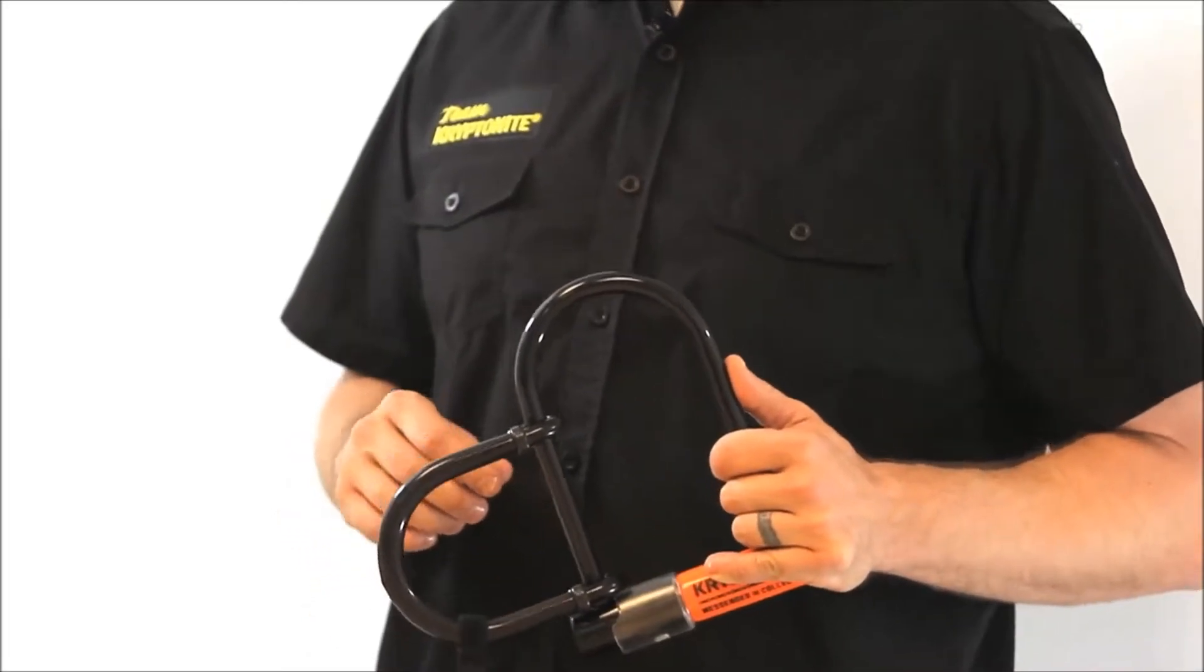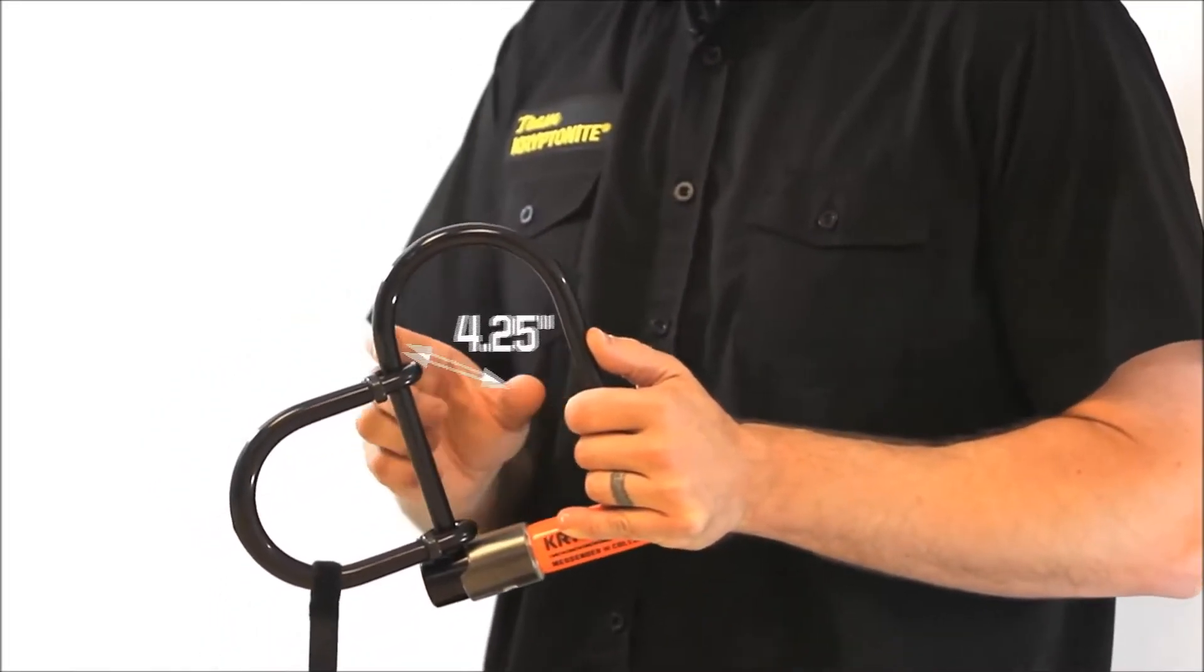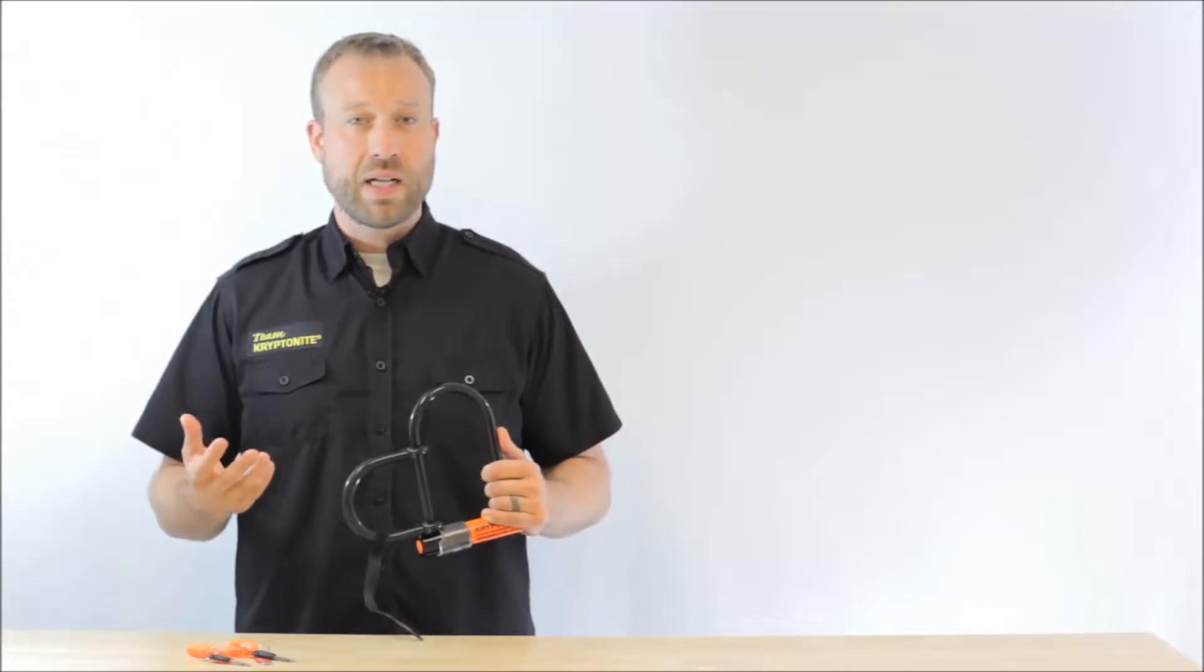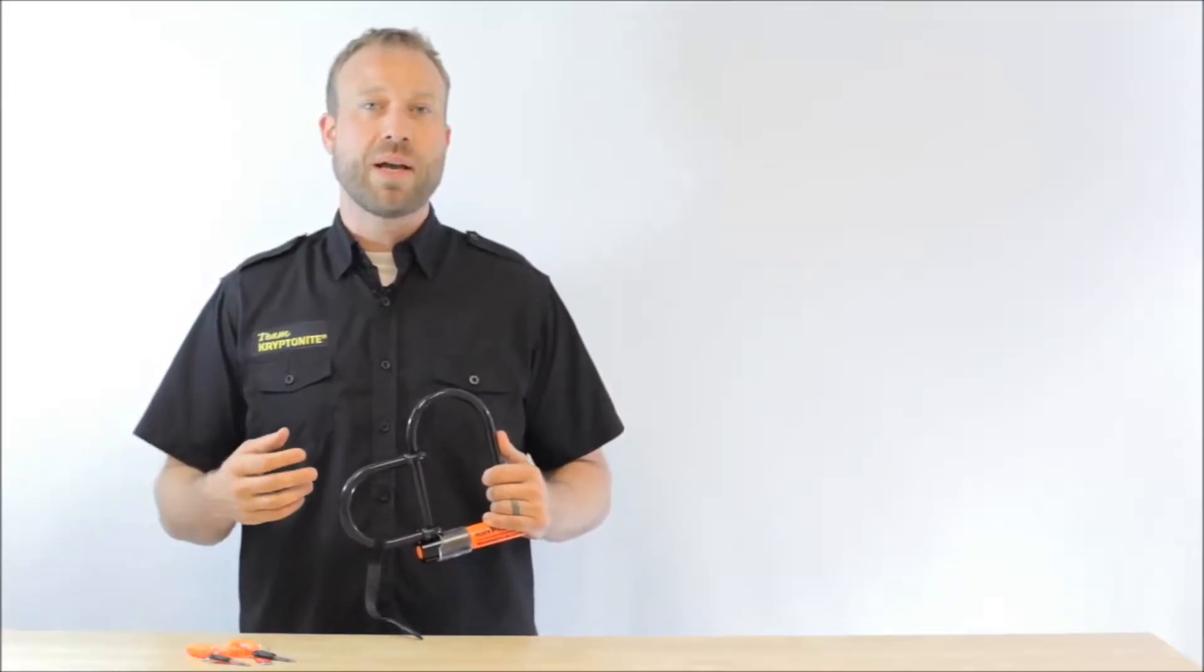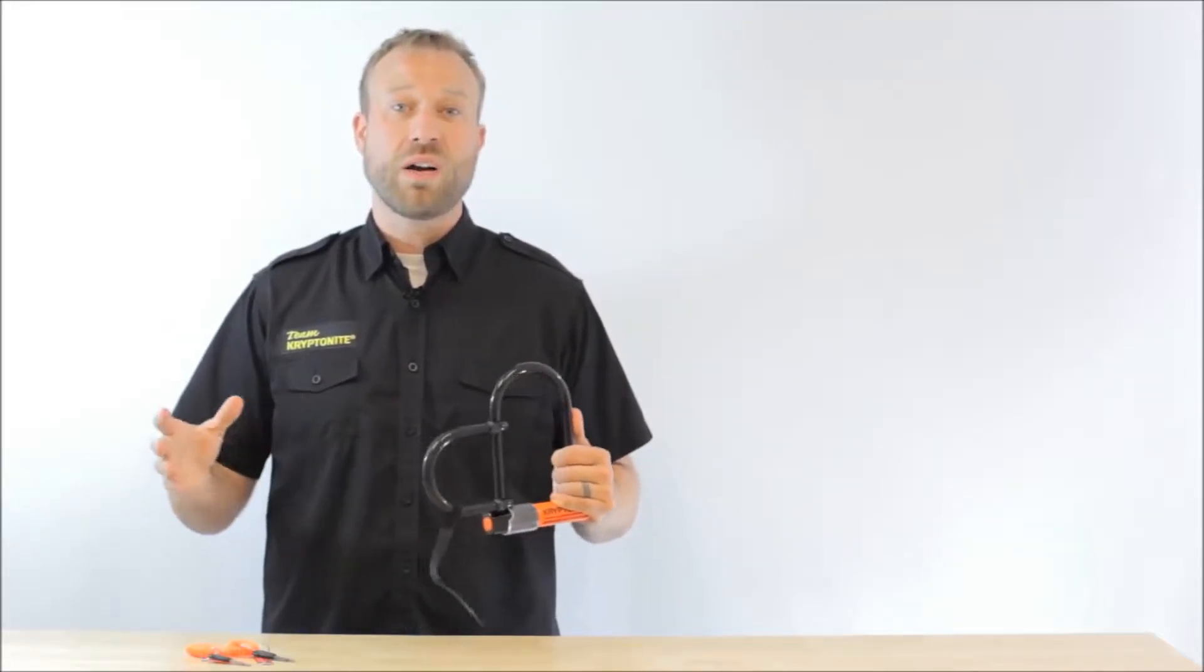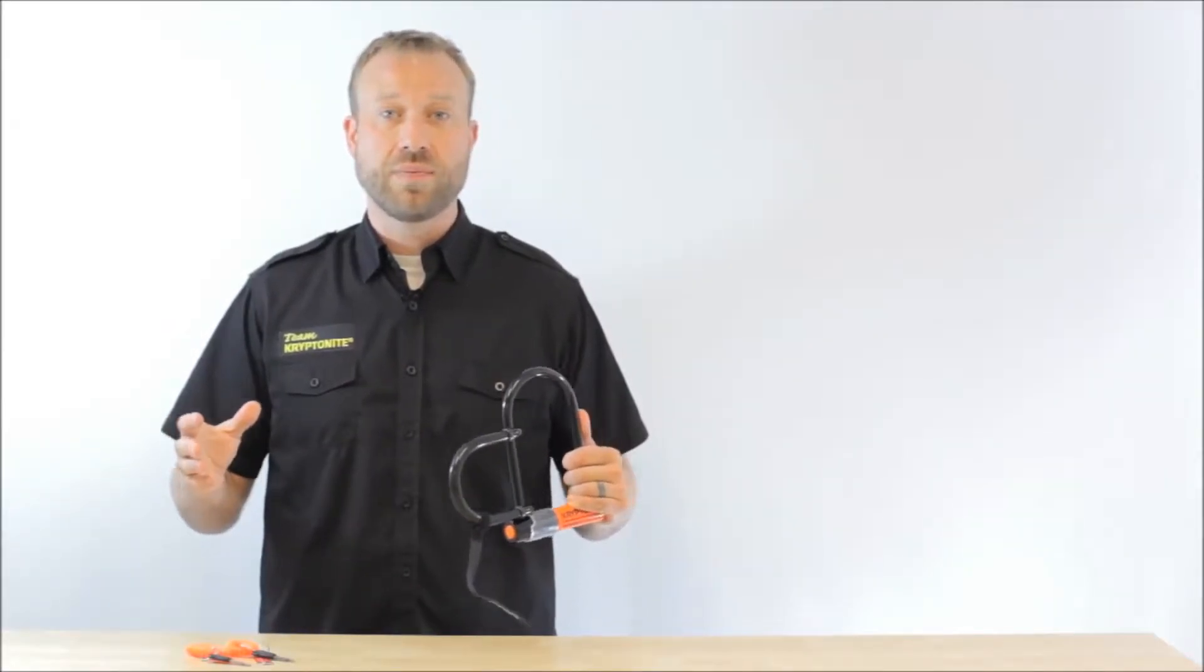The interior locking dimensions are 3.75 inches by 6.5 inches. Now that's actually a half inch wider than our Evolution Mini right now. It doesn't sound like a lot, but from feedback we got from the messengers, as well as our own measurements on the street, that half inch is going to allow you to lock up to a much wider variety of lockup situations out there.